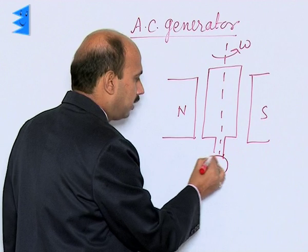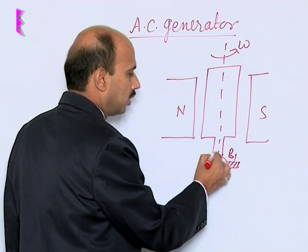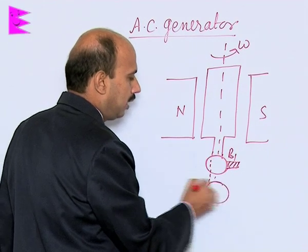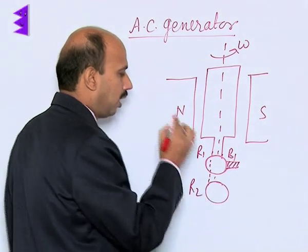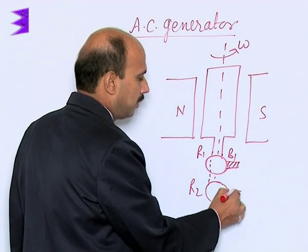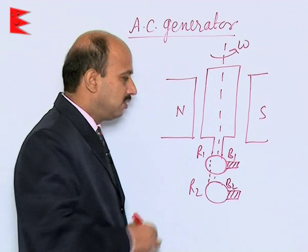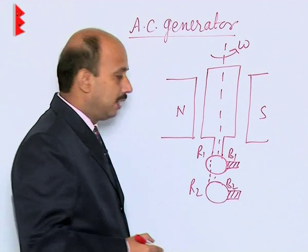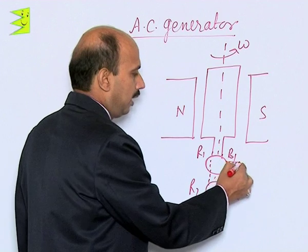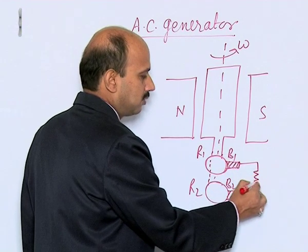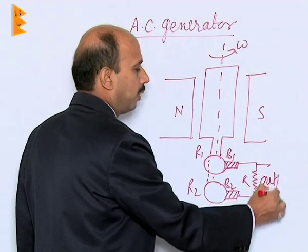The coil is connected to ring R1 with carbon brush B1, and another part is connected to ring R2 with carbon brush B2. These rings rotate against the brushes without moving them. A high resistance or load resistance R is connected and the output is taken across it.